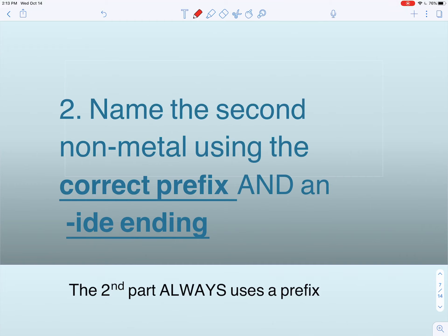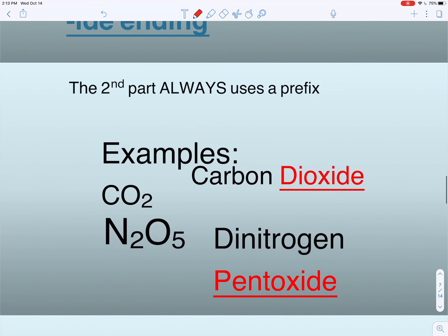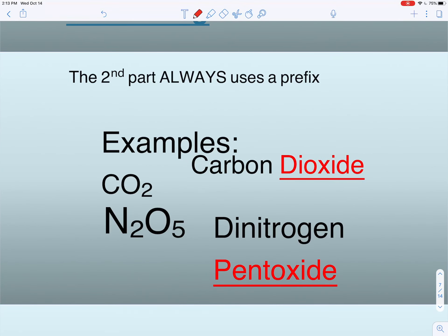And then we name our second nonmetal using the correct prefix and ide ending. So here we always use a prefix for the second part. CO2 is carbon dioxide. The second part has two oxygens, so we use di for two.